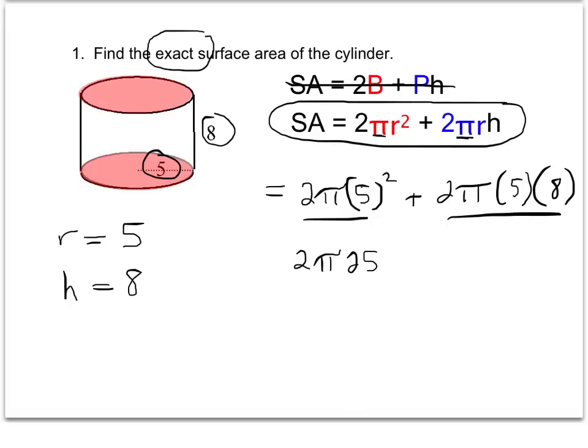Then 2 times 25, leaving it in π form, simplifies to 50π.